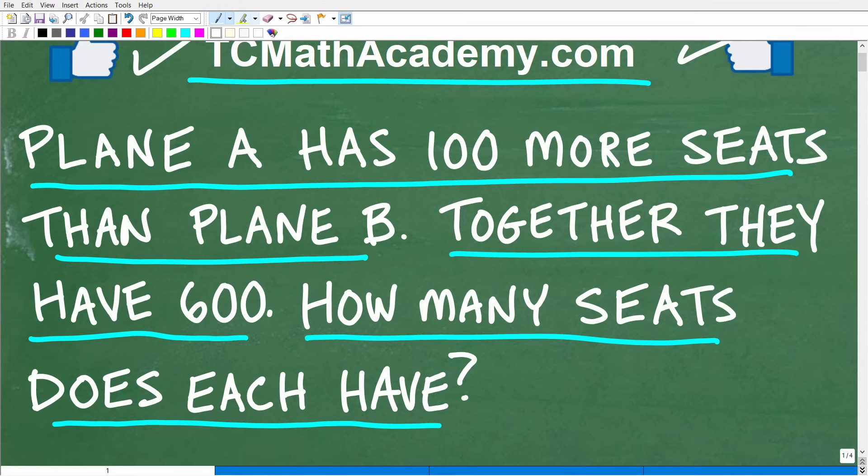Okay, so one more time, let's take a look at the question. We have plane A. It has 100 more seats than plane B. Together they have 600 seats. How many seats does each plane have?